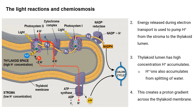This released energy is used to pump protons from the stroma into the thylakoid space through the cytochrome complex, giving the thylakoid space a high hydrogen ion concentration compared to the stroma. Additionally, photolysis of water also releases hydrogen ions, which contributes to the high proton concentration within the thylakoid space. This creates a proton gradient across the thylakoid membrane.